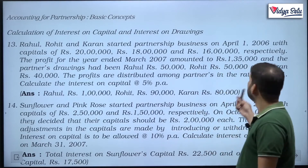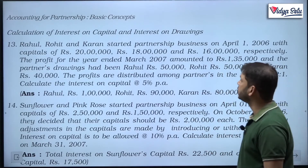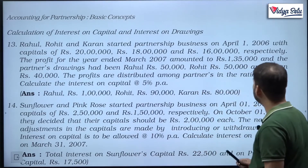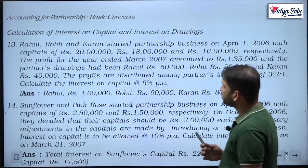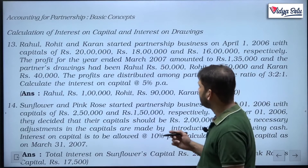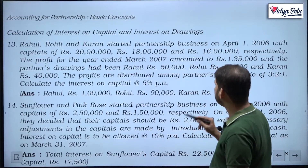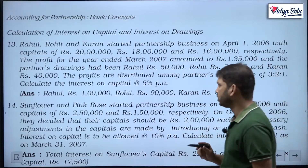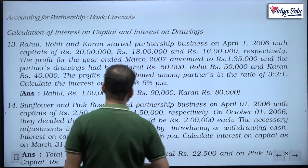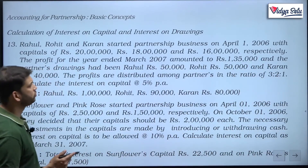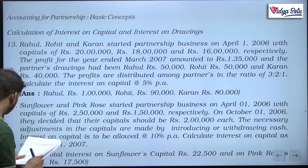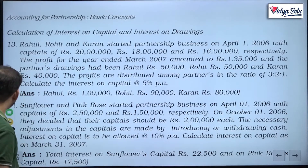The profit for the year ended March 2007 amounted to rupees 1 lakh 35,000, and the partners' drawings had been: Rahul rupees 50,000, Rohit rupees 50,000, Karan rupees 40,000. The profits are distributed among the partners in the ratio of 3 to 2 to 1. Calculate the interest on capital at the rate of 5 percent per annum. Such a simple question, let us do it quickly.